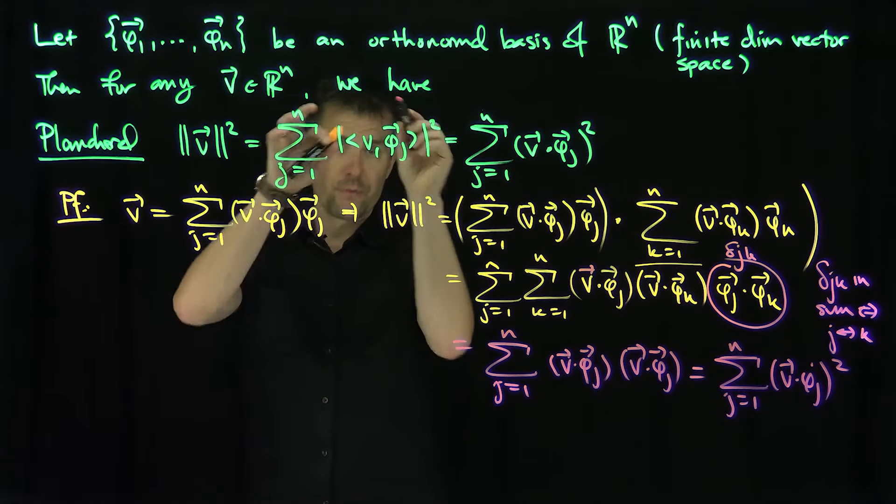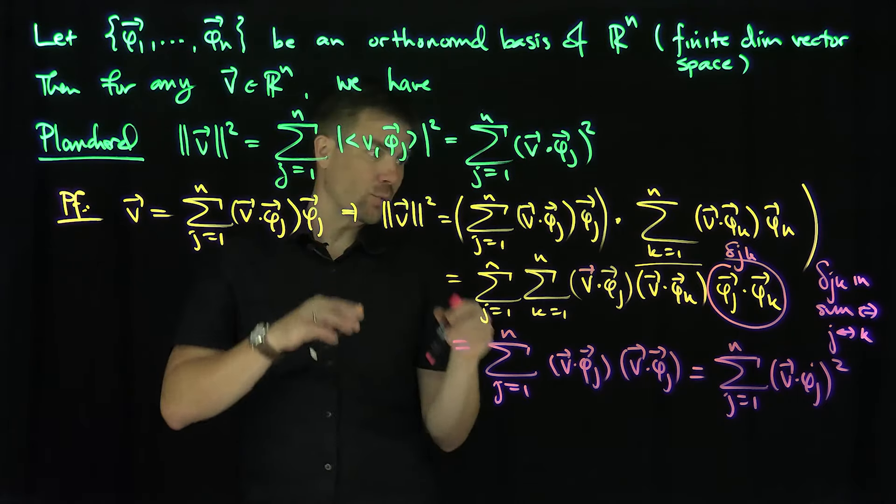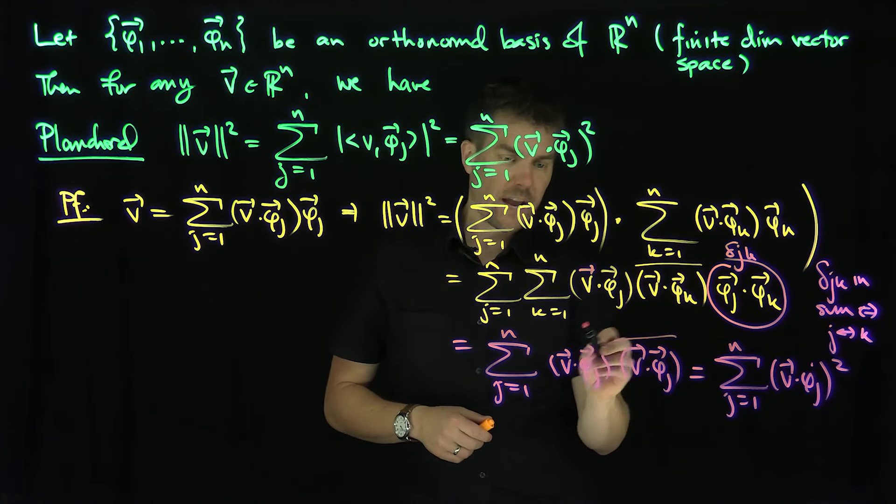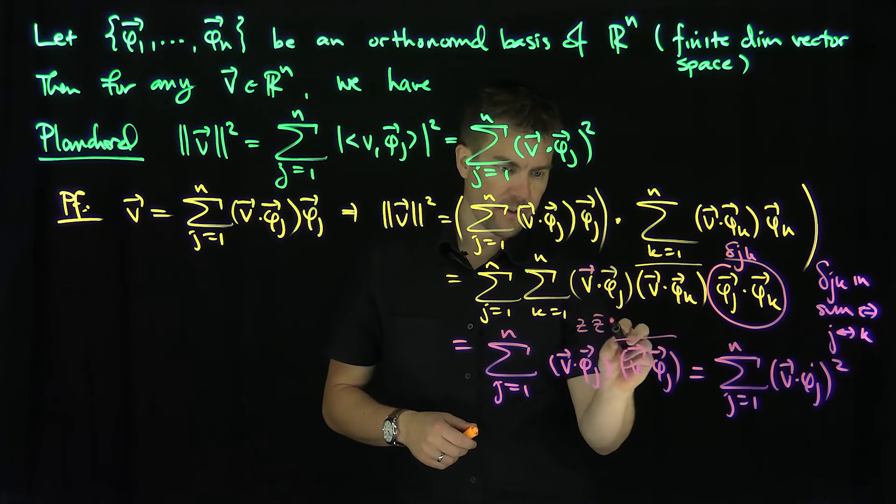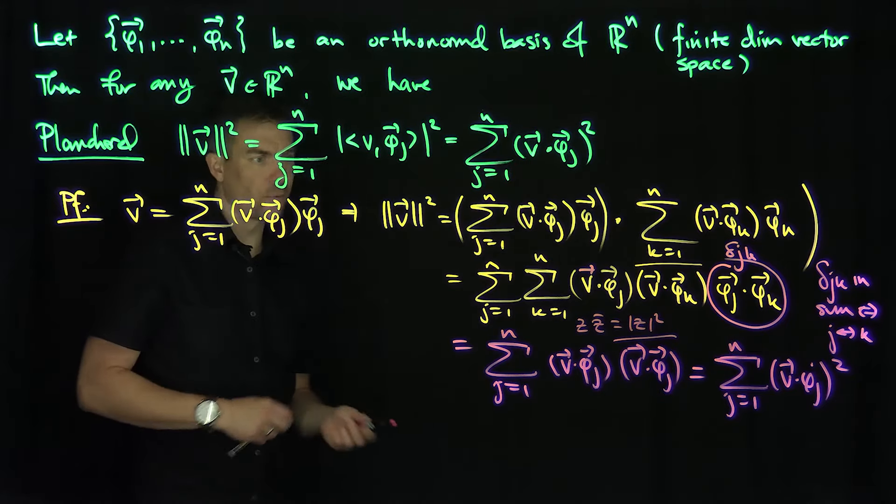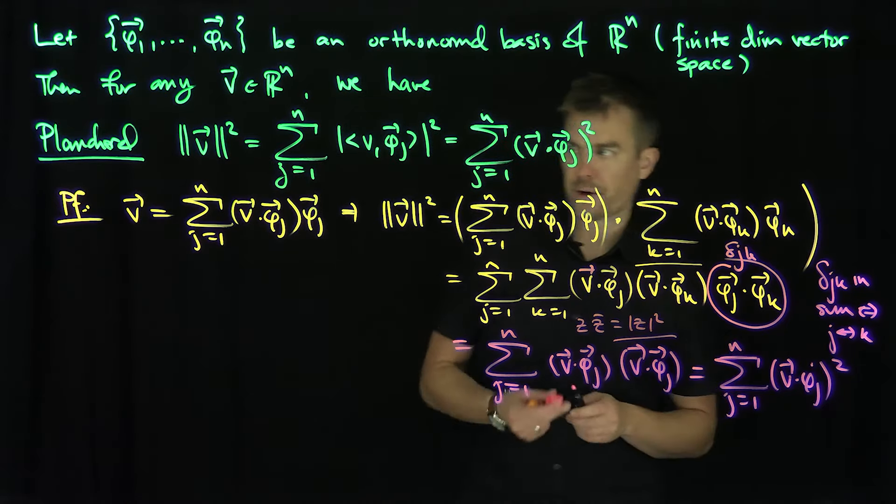So this is exactly what? This is exactly the sum j goes from 1 up to n of v dot phi_j quantity squared. In the case of an inner product space, you have to let the modulus square because there's a complex conjugate. If there was a modulus here, this would be z times z bar. And we know that z times z bar, in the complex case, would be modulus z quantity squared. But in real space, this just boils down to the ordinary square.